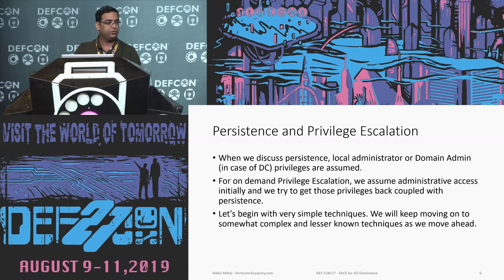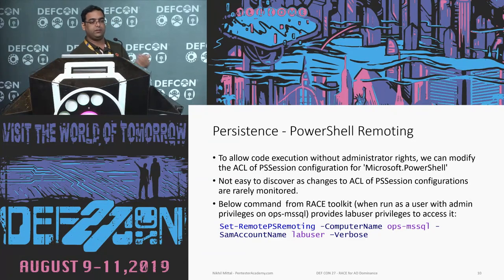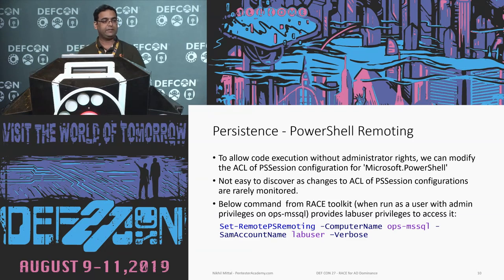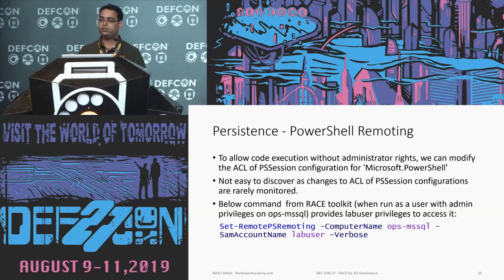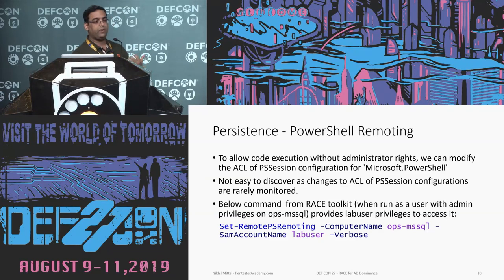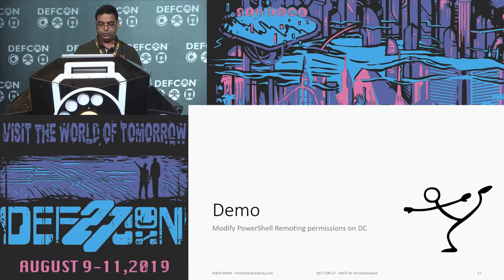We'll begin with simple techniques, then move to more complex ones. Let's pick up PowerShell remoting. To allow code execution without administrator rights, we need to modify the permissions or ACL of the PowerShell endpoint. If you run Get-PSSessionConfiguration on any Windows machine, you get a list of all remoting endpoints enabled on that box. We'll modify the ACL of the default endpoint and provide one of the users we control privileges to connect to that machine. From the RACE toolkit, using the following command, we can add or modify the ACL of the PowerShell remoting on the machine specified in the ComputerName parameter for the user lab_user.